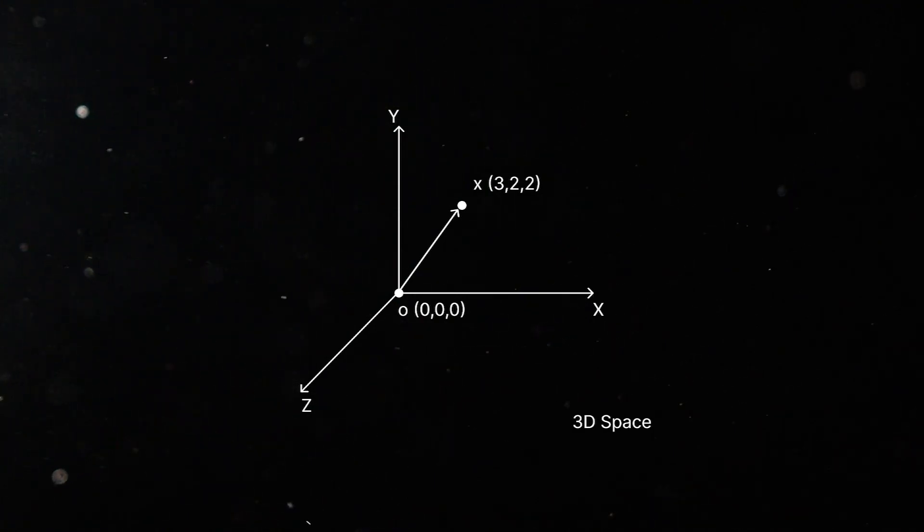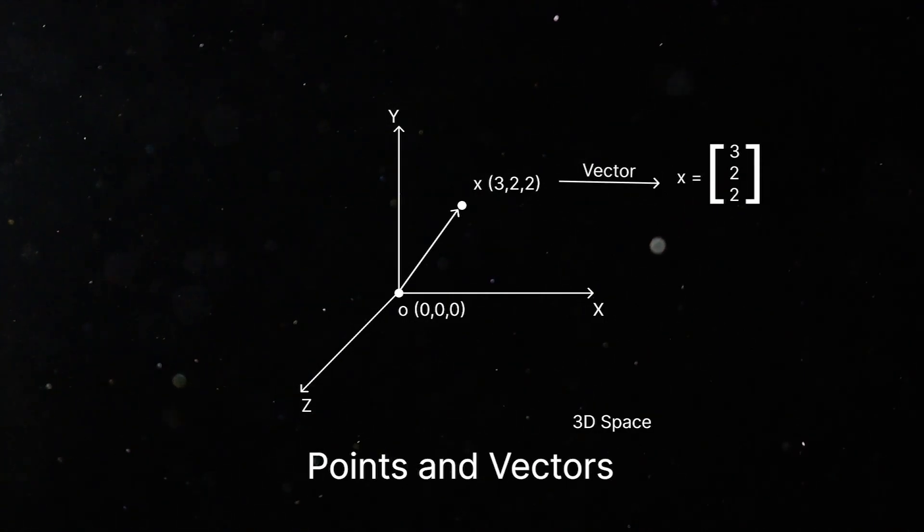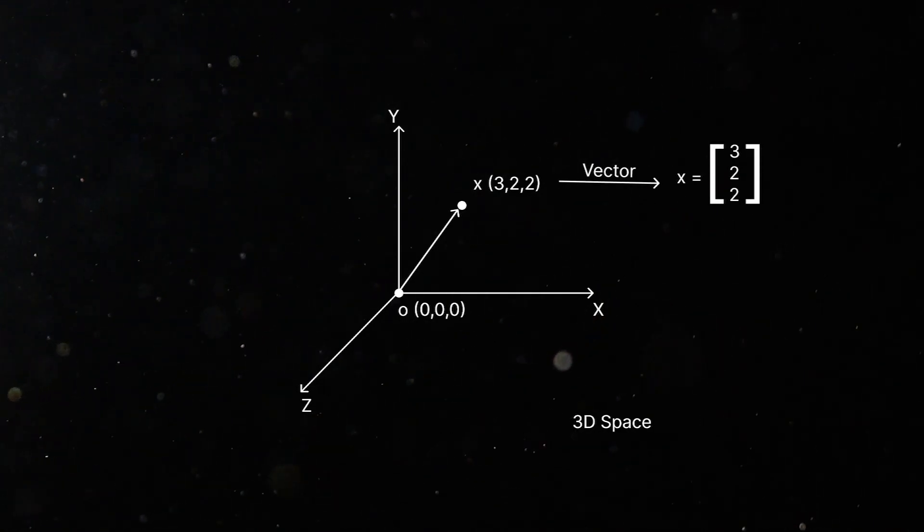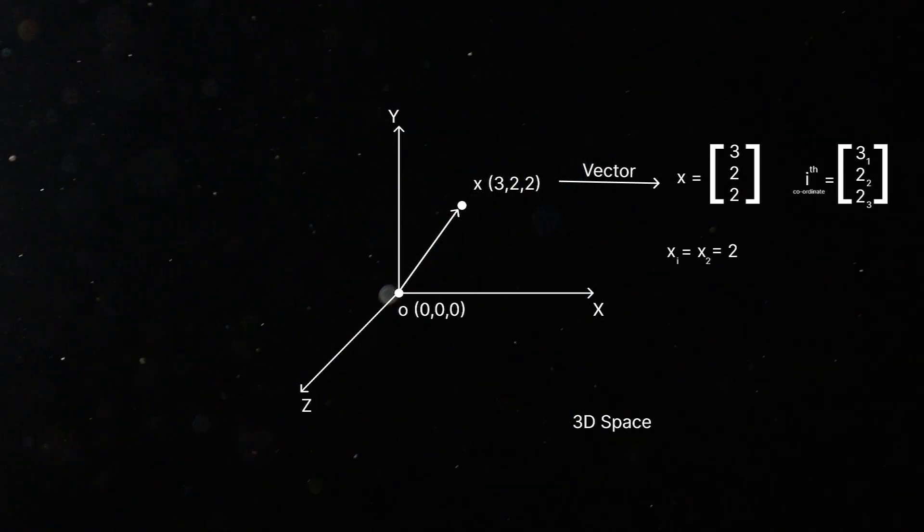It's important to note that in this course, we'll use the term point and vector interchangeably. We can represent x as a vector by listing all its coordinates. The i-th coordinate in this vector is xi. For example, x2 is equal to 2.